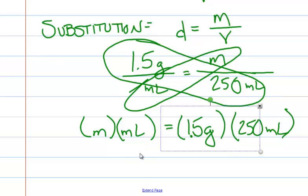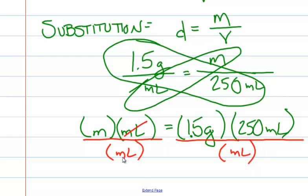Okay, now if we want to get mass alone, because mass is what we're looking for, then what do we have to do? We have to divide this side by milliliters to get it alone. Whatever we do to one side, we do to the other. So if we do that, we can get mass alone. These are going to cancel out because they're on the top and the bottom. Over here, this milliliters and this milliliters will cancel out.